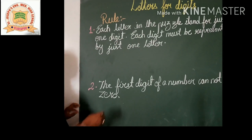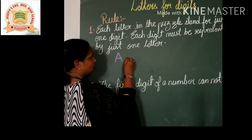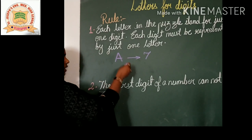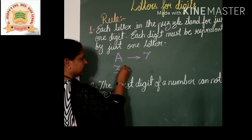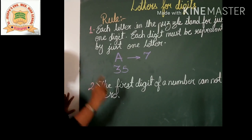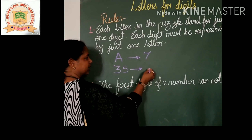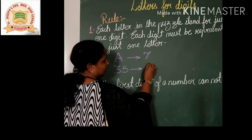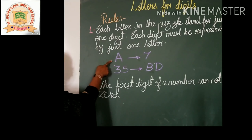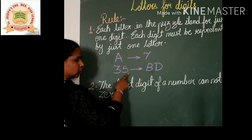What is the meaning of this rule? One letter stands for one digit. You can take any digit — we will take here 7. Now I will write here 35. Can you tell me how many digits are here? They are two digits, which means we get two letters. I will take V and D. One letter stands for one digit; two letters stand for two digits.